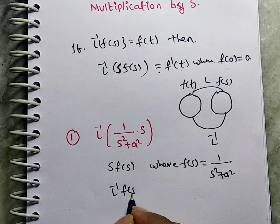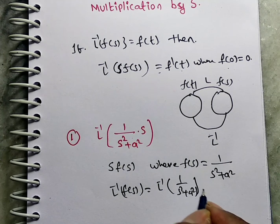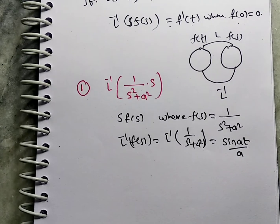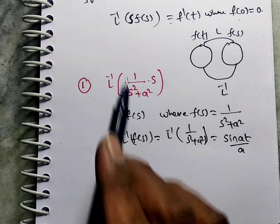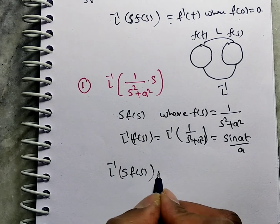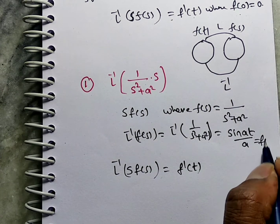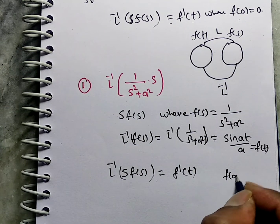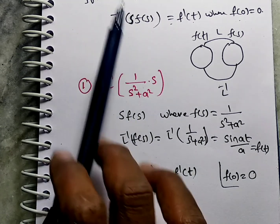Then what is L inverse of F(S)? L inverse of 1/(S²+A²) equals sin(AT)/A. Now, the formula for multiplication by S: L inverse of S·F(S) equals f'(T). What is f(T) here? sin(AT)/A. Moreover, f(0) should equal 0. Take f(0): f(0) means sin(0)/A, and sin(0) is 0. So yes, we can apply the multiplication by S formula.